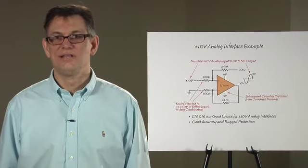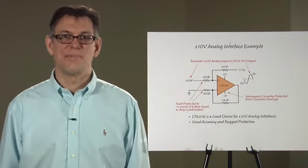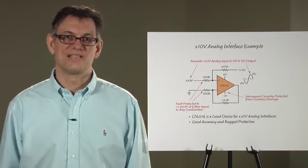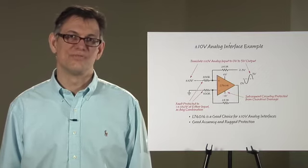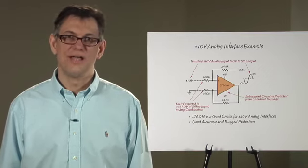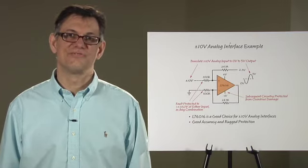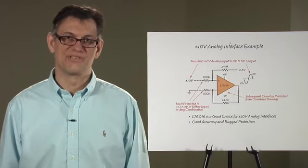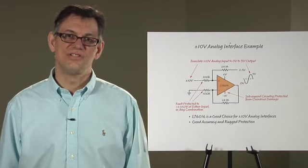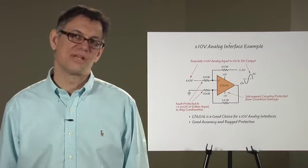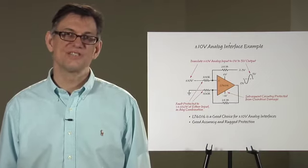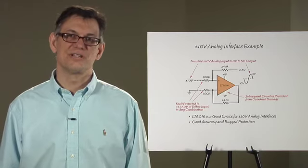In summary, the LT6016 is an op amp that for the first time combines excellent precision specs such as low offset voltage, low bias current, and low noise with unique protection features at the input pins of the op amp. This allows you to use this op amp in many applications where you have to make precise readings in the presence of rugged uncertain environments.